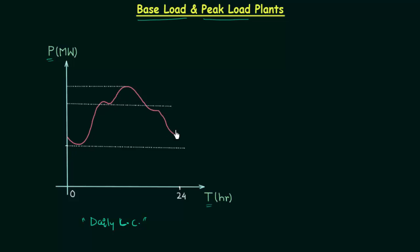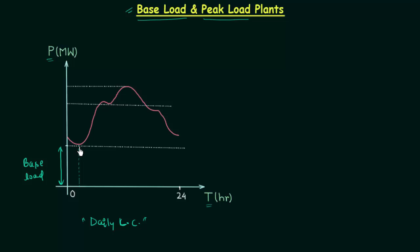This is the variation of load in 24 hours. We saw two terms in the load curve: the first one was base load and the second one was peak load. In this plot, this region is the base load. We call this amount of power the base load because for 24 hours we need to supply at least this amount continuously. This is the minimum load — the load does not go lower than this — therefore we call it base load.